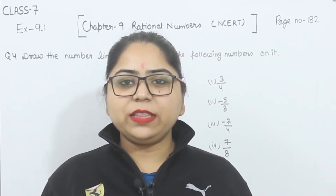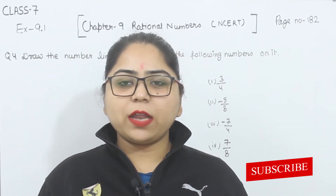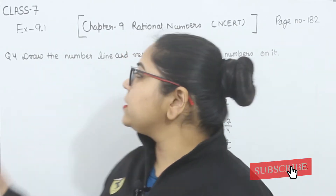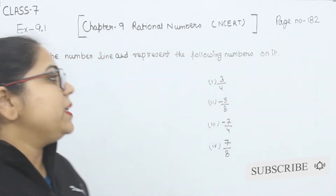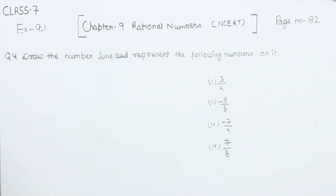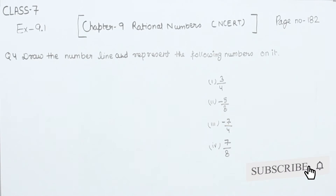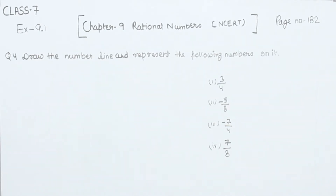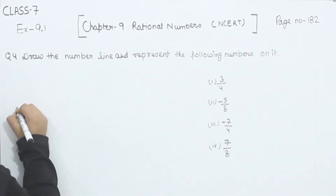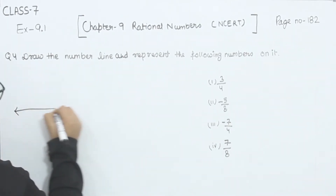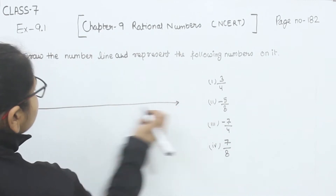Hello everyone, this is Preeti. We are here with another question of exercise 9.1, page number 182, question number 4. Draw the number line and represent the following rational numbers on it. There are 4 rational numbers given to us and we have to express them on the number line.